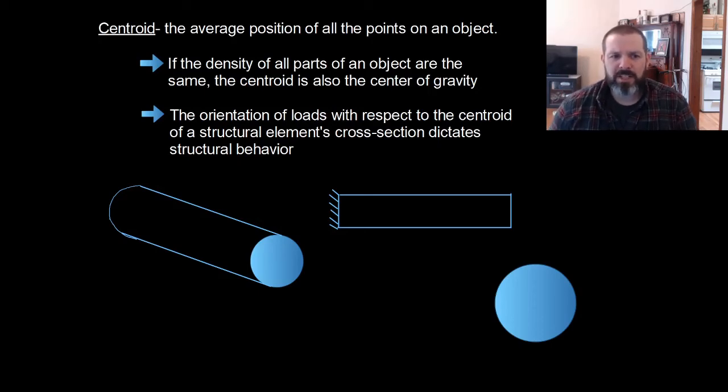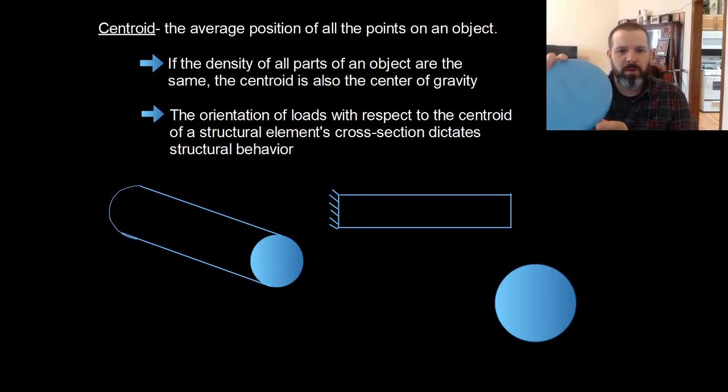The centroid of an object is the average position of all the points of an object. If the density of all parts of an object are the same, the centroid is also the center of gravity.